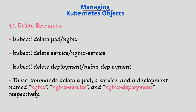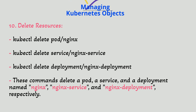10. Delete resources. `kubectl delete pod/nginx`, `kubectl delete service/nginx-service`, `kubectl delete deployment/nginx-deployment`. These commands delete a pod, a service, and a deployment named nginx, nginx-service, and nginx-deployment, respectively.